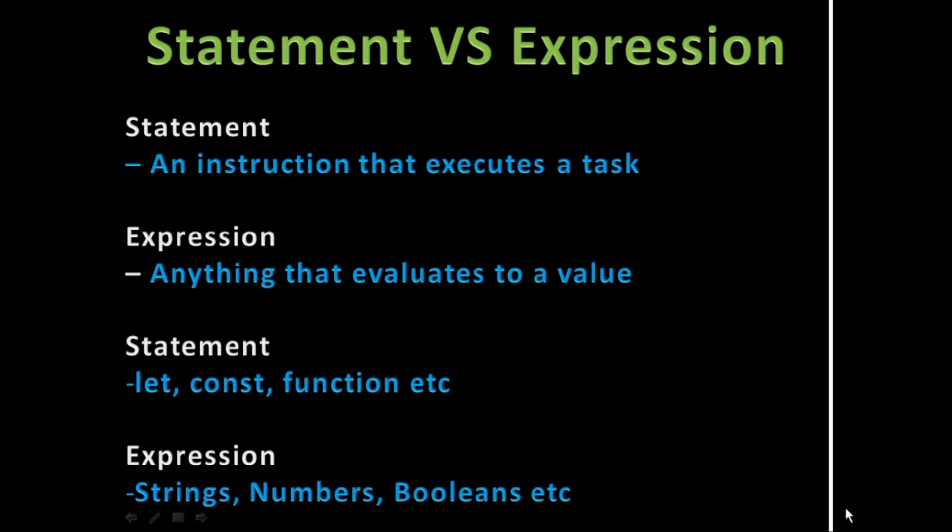We have examples of statements like let and const. For expressions we have strings, numbers, booleans, objects, and arrays. You should understand that there is a great difference between a statement and an expression. An expression is anything that evaluates to a value; a statement is an instruction that executes a task. If you bring a statement into your JSX you are going to be bounced — JSX only allows you to write your code as an expression.